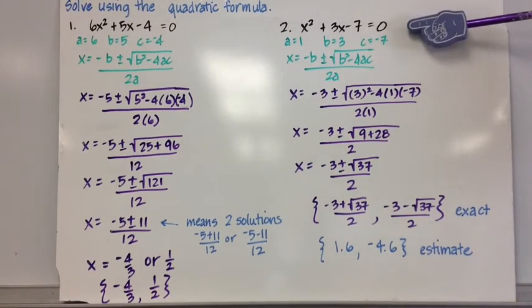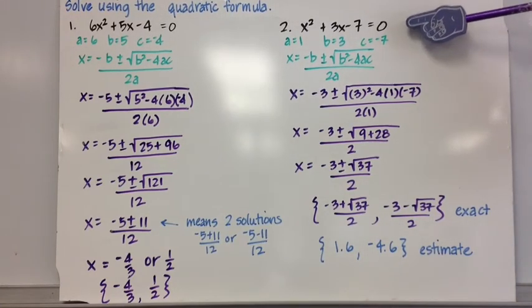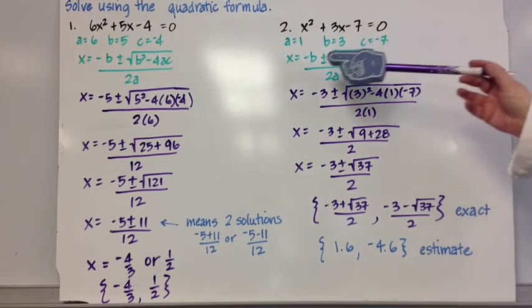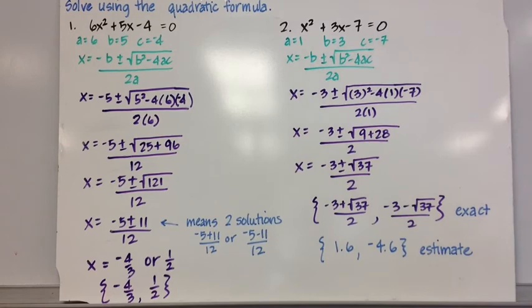Quadratic equation, x squared plus 3x minus 7 equals 0, a is 1, b is 3, c is negative 7. My quadratic formula is x equals negative b plus or minus the square root of b squared minus 4ac all over 2a.